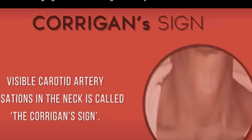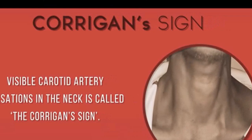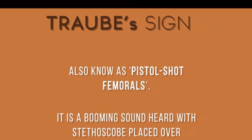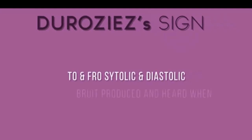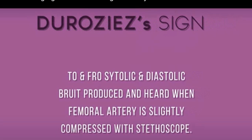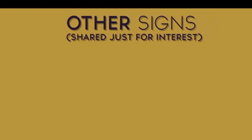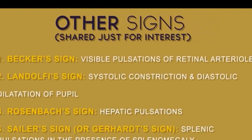Corrigan sign is a visible carotid artery pulsation — also called dancing carotid or Corrigan pulse. Traube sign is pistol shot femoral, where you put the stethoscope over the femoral artery and get a booming sound. Duroziez's sign is a to-and-fro systolic and diastolic murmur heard over the femoral artery — mainly a retrograde murmur. Hill's sign is a difference between systolic blood pressure of the upper and lower extremity. Baker's sign, Landauk tree sign, Rosenbach sign, and Gerald sign — also called sailor sign — where you get splenic pulsation with splenomegaly.